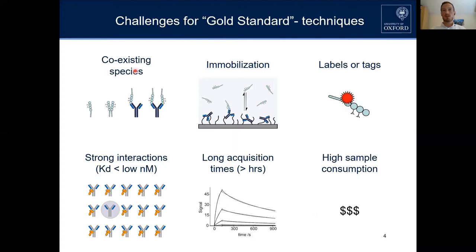For example, do you have one receptor or two bound to your antibody? These techniques often require either immobilization or labeling, which can of course alter the interaction.